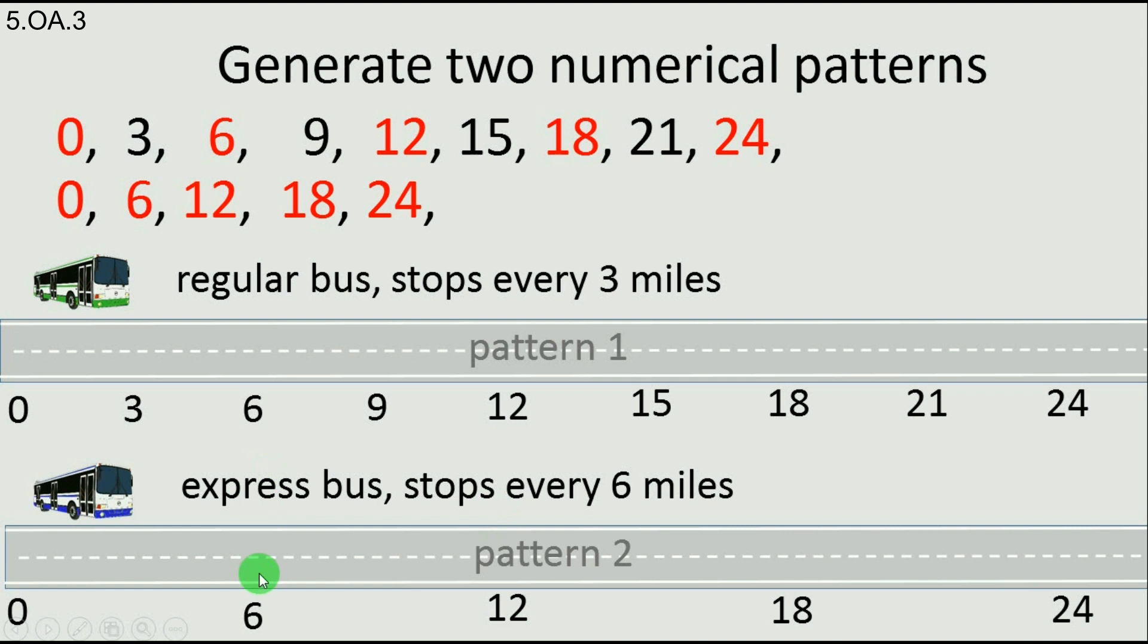If we want to go to the stations 6, 12, 18, and 24, we can take any bus because any bus will get there. That's because the first pattern contains the second one, and the regular bus stops in every station the express bus stops. The other way around is not true. The second pattern does not contain the first pattern. The express bus doesn't stop in every station the regular bus stops. For example, the express bus ignores stations 3, 9, 15, and 21.